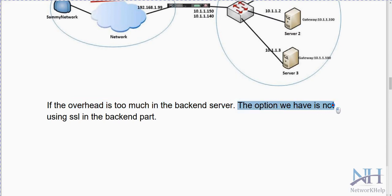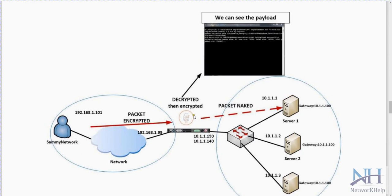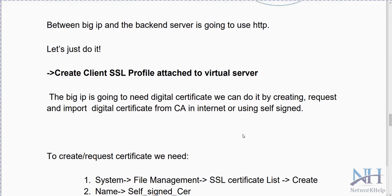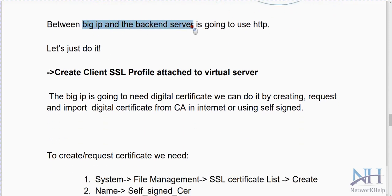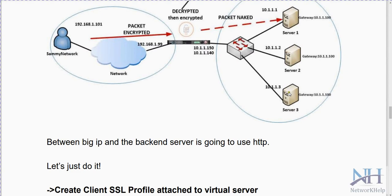For security purposes, if the overhead is too much on the backend server, the option is to not use SSL in the backend part. In that case, traffic comes to F5 encrypted, gets decrypted, then re-encrypted — we can see the payload — but from F5 to the destination the packet will be plain text. So between Big IP and the backend server, HTTP without encryption is used, while the connection from client to F5 uses HTTPS.